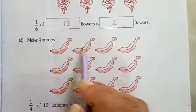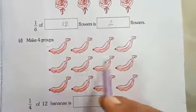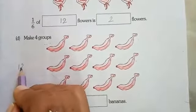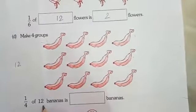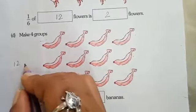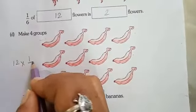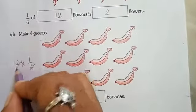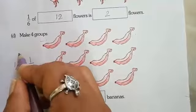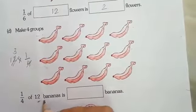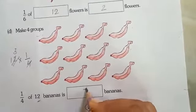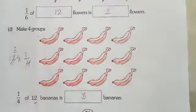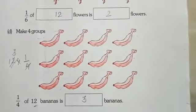Next question: make 4 groups. Here you can see bananas — 1, 2, 3, 4, 5, 6, 7, 8, 9, 10, 11, 12 — total 12 bananas. You have to find the one-fourth part of 12 bananas. So 1 by 4 — in the 4 times table, 4 threes are 12, so one-fourth of 12 bananas is 3 bananas. Understood? So till here I will teach you. Thank you.